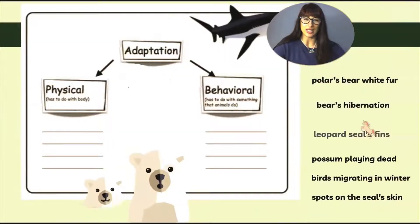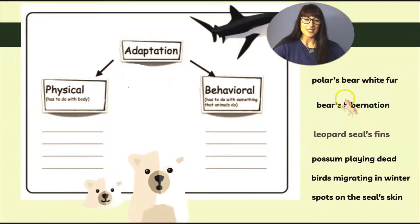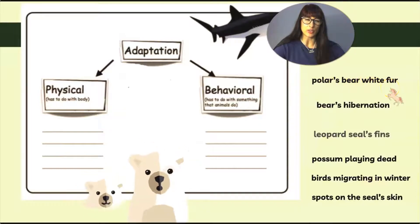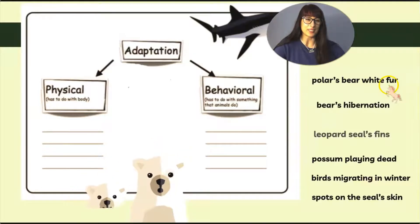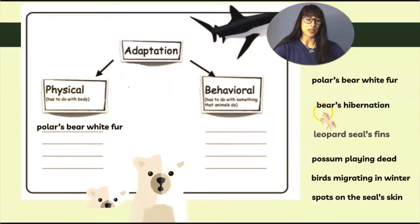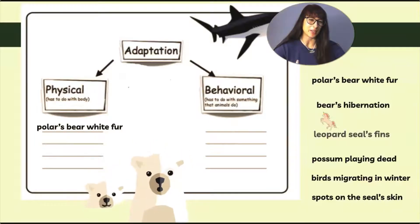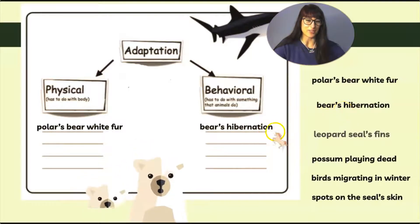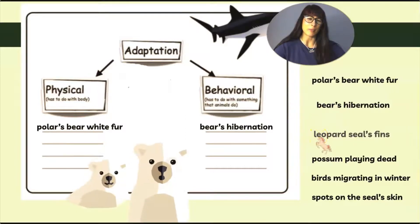Now let's look at this worksheet and put our skills into practice. Polar bear white fur — is it something they do or something they have in their body? It's something they have in their body, so we put this in the physical adaptations column. Bears hibernation — that's not part of their body, it's something they do, a behavior — so we put this into behavioral adaptation.